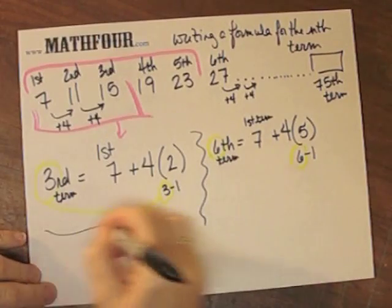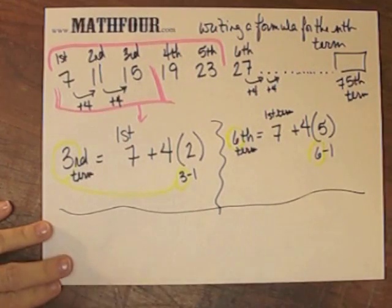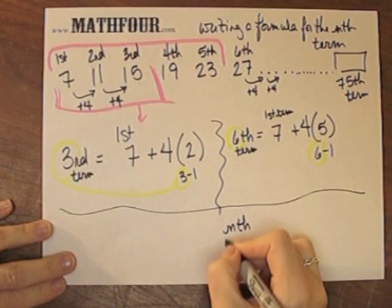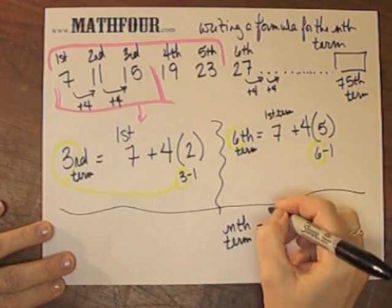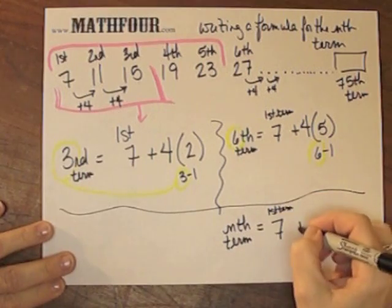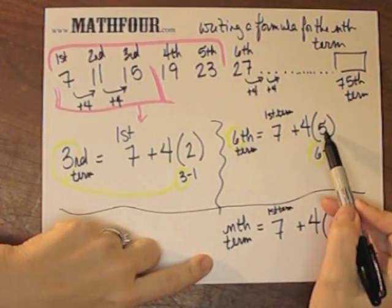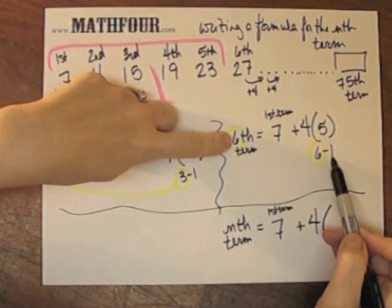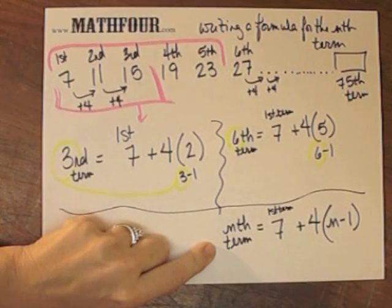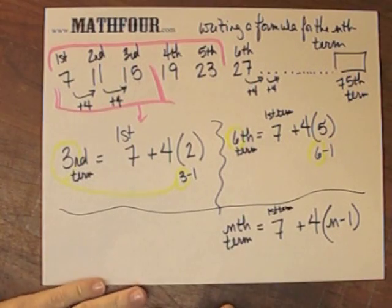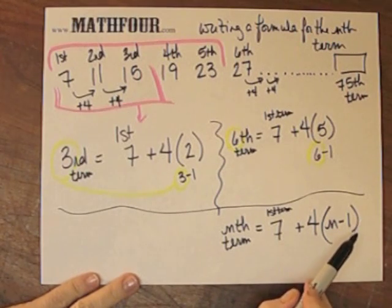So for the nth term, I have the nth term equals, I'm still going to use the 1st term, plus, and I'm adding 4, times, this number is always this guy minus 1. So this is n minus 1. Now, I specifically started this saying I'm not going to ask for the n minus 1th term.